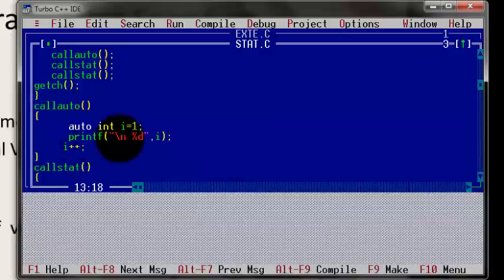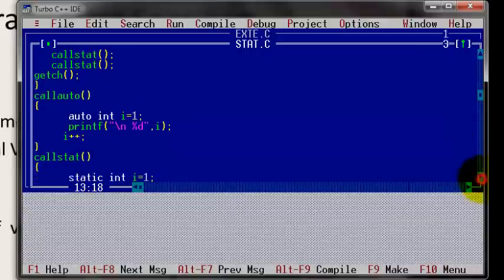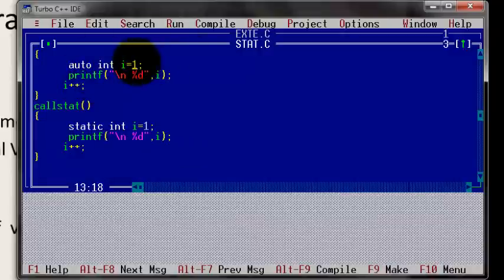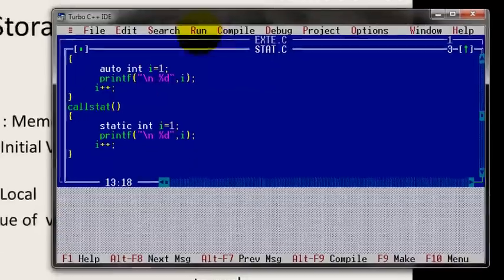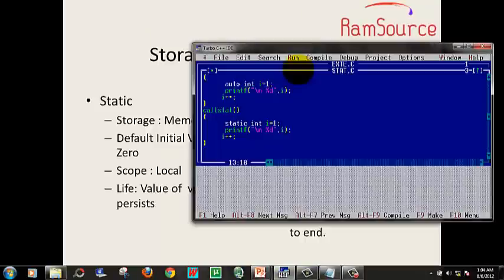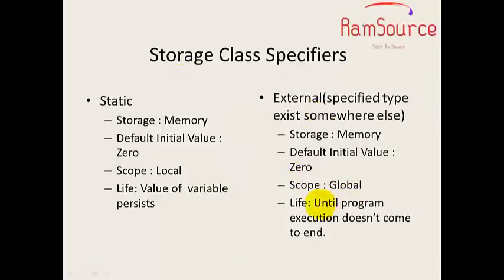Now for static: Since the default is auto, int i equals 1, printf percentage d prints i. If you just increment, the values are not retained, so output is one one. But if you use static, the values are retained. First call prints one, increment makes it two, second call prints two. Output is one two. Superb, this is how it gets executed. I think you might have understood storage class specifiers in a broad manner.